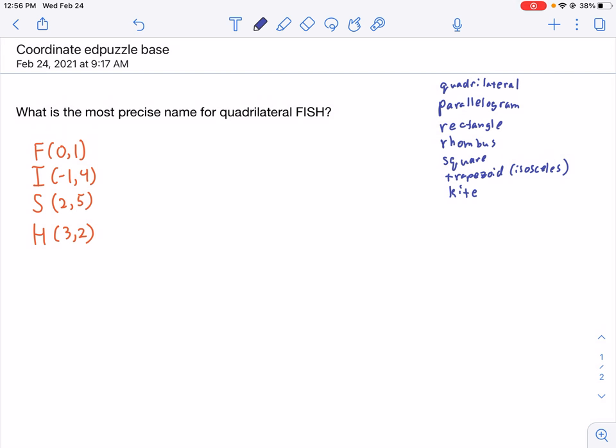The problem is phrased as: what is the most precise name for quadrilateral FISH? We are given the coordinates of FISH's vertices.